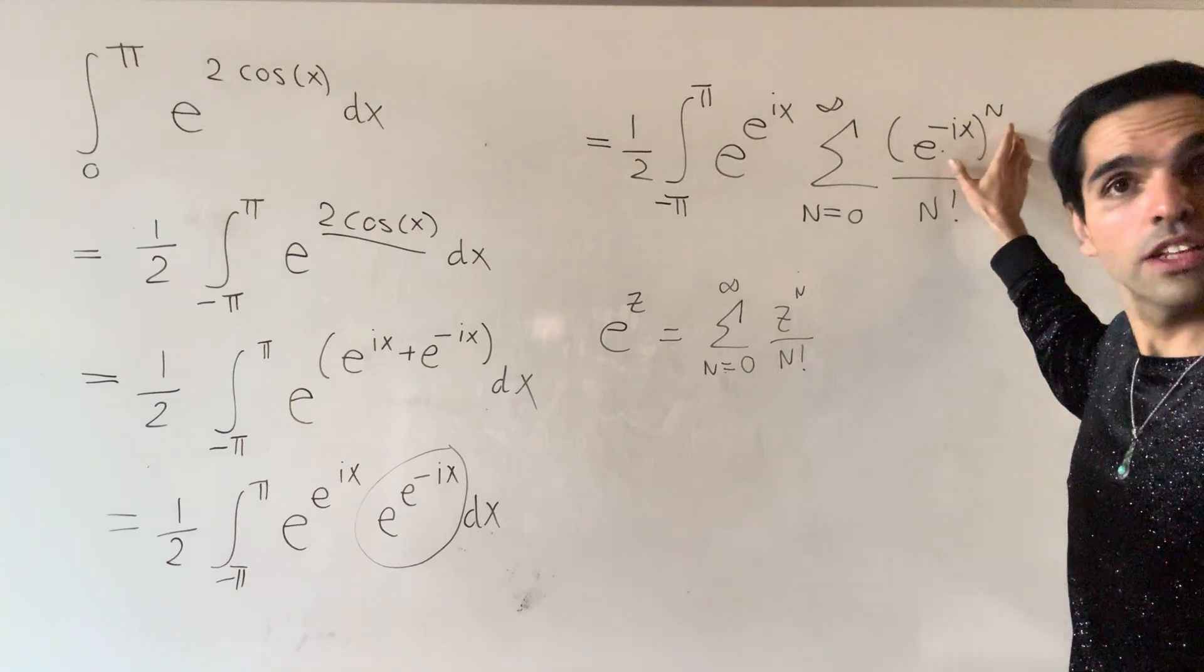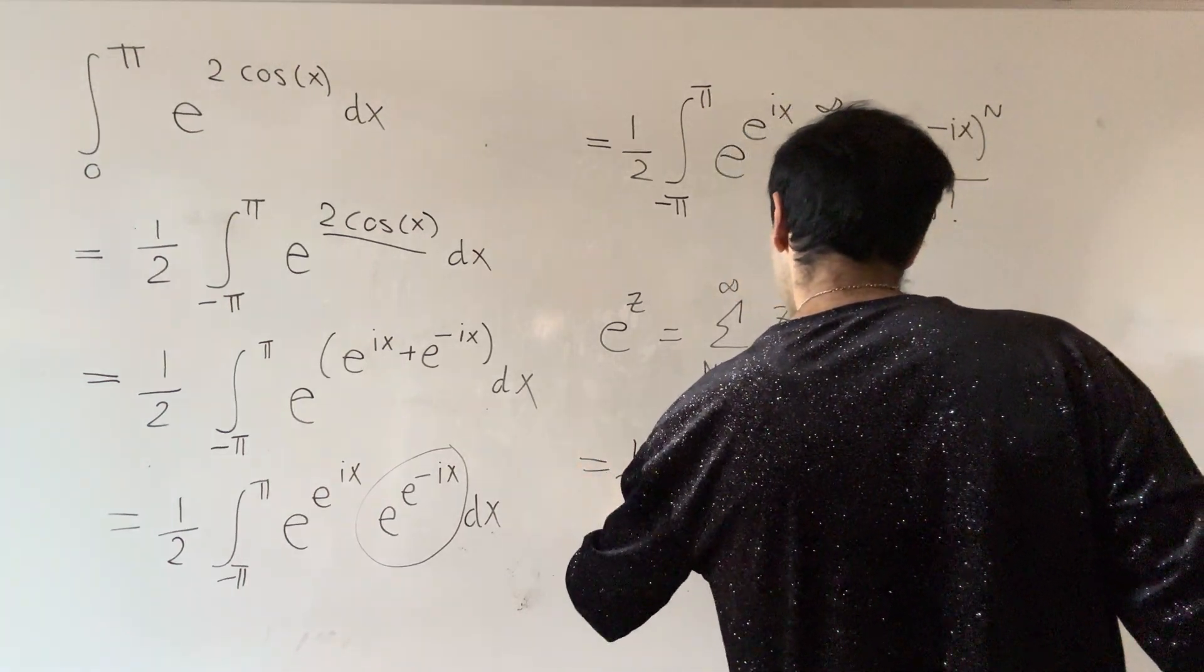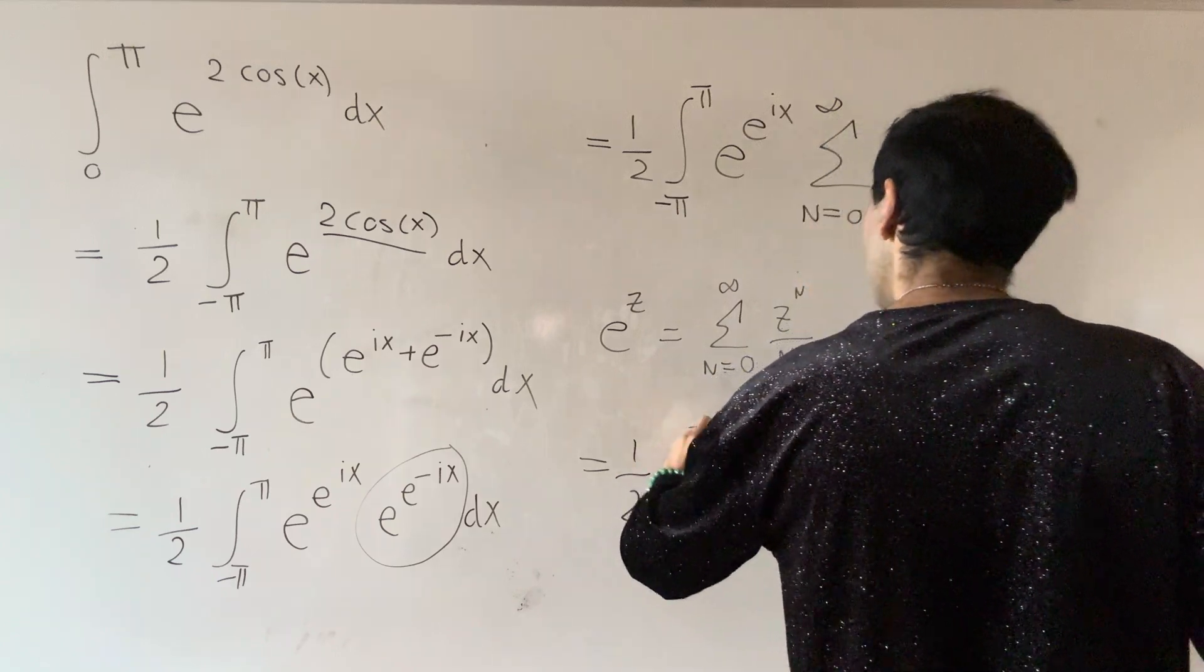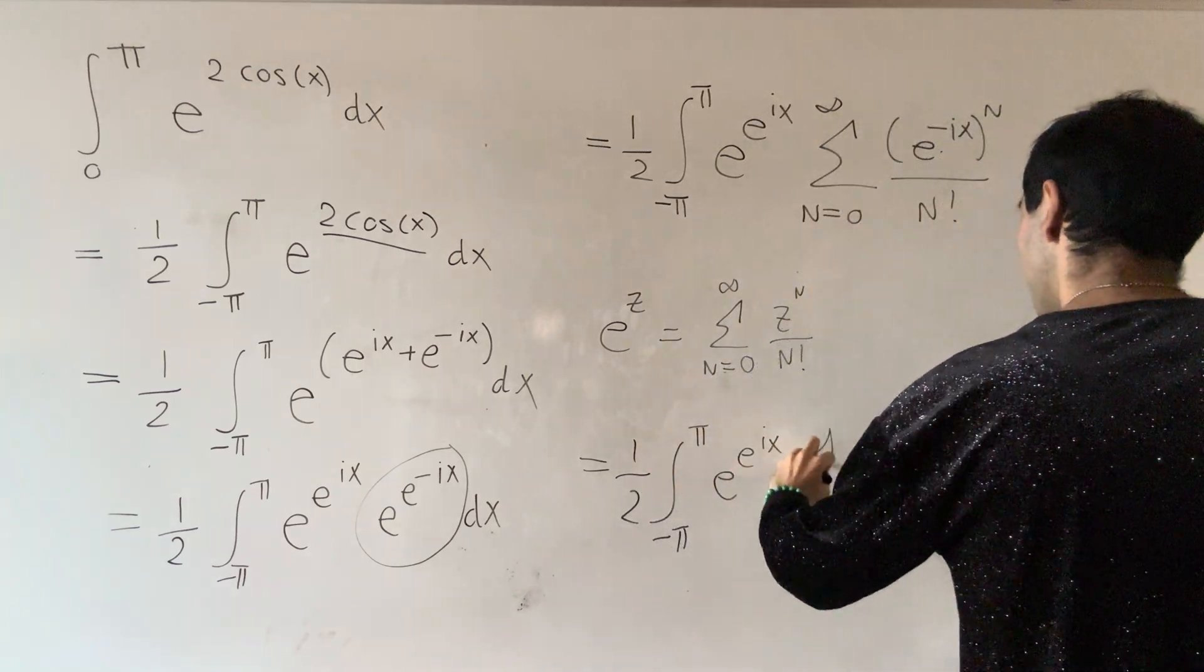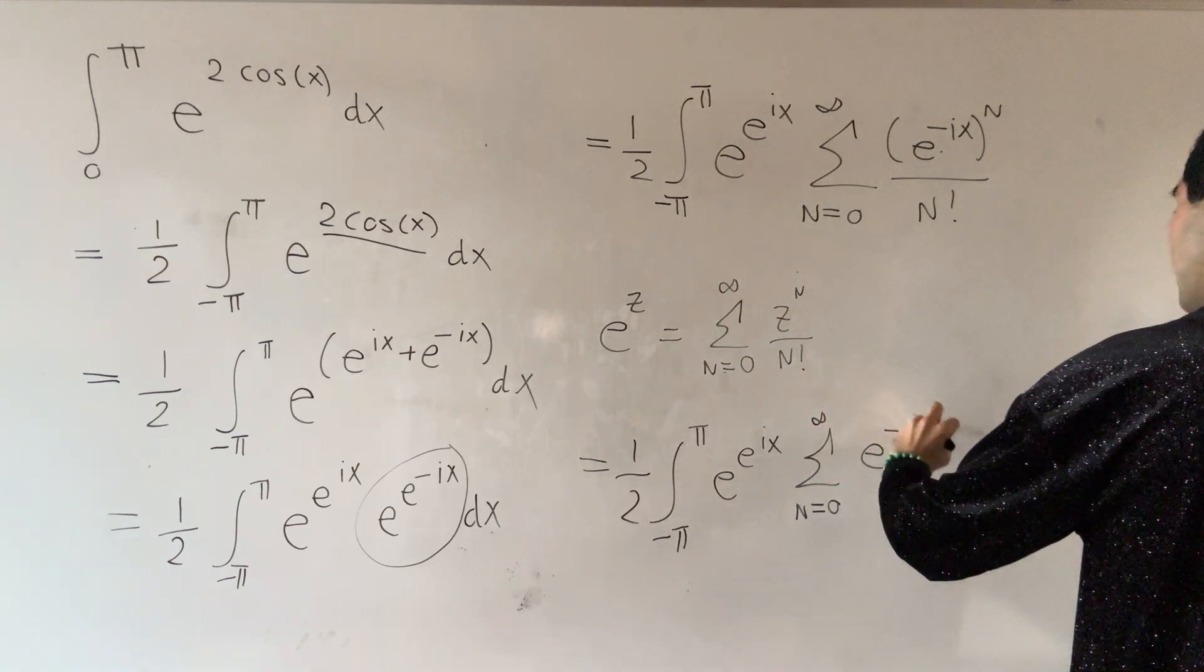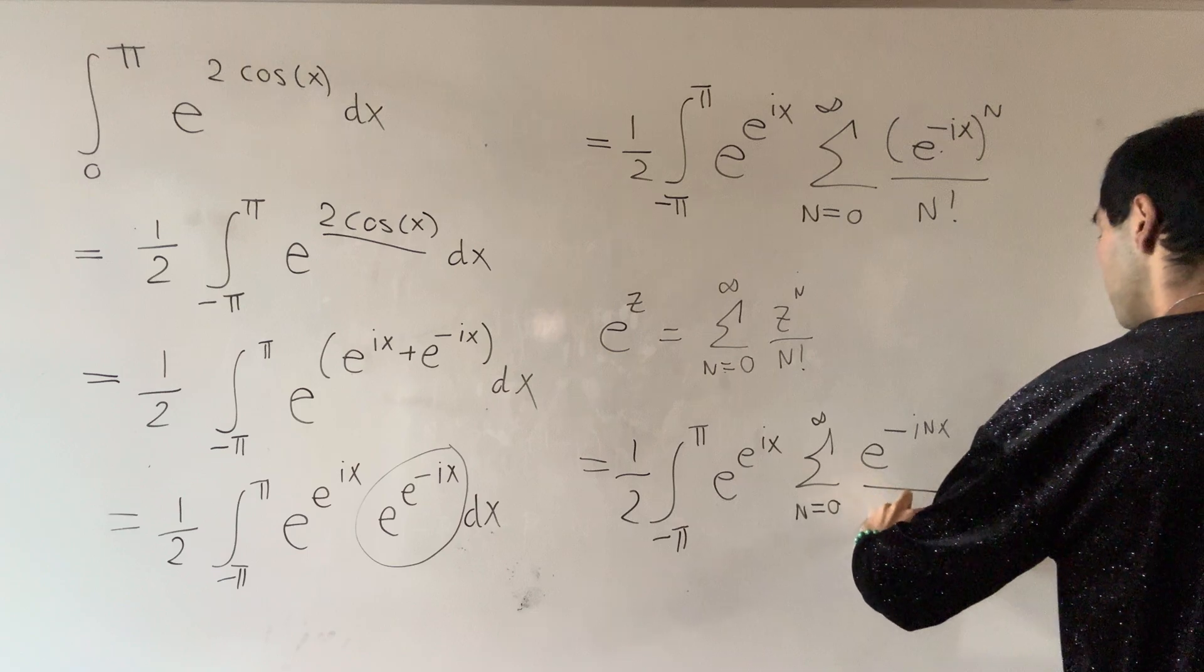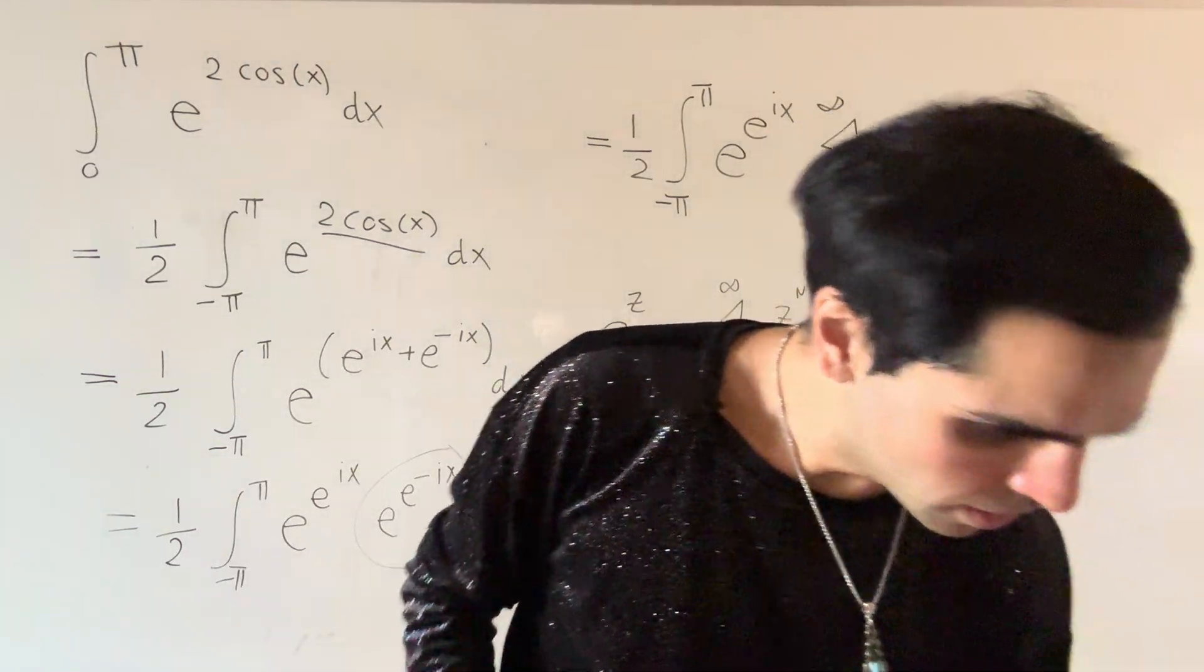Good, and now, we can use laws of exponents. So this becomes one half integral from minus pi to pi of e to the e to the i x, and then sum from n from 0 to infinity of e to the minus i n x over n factorial.